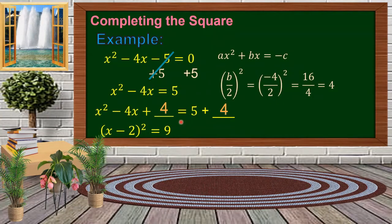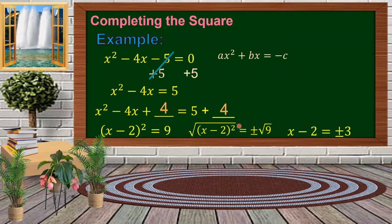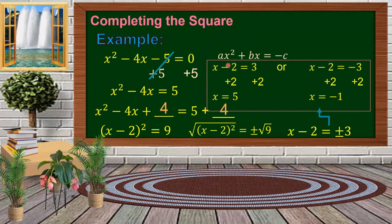We take the square root of both sides. The square root and exponent 2 cancel, leaving x minus 2 equal to plus or minus 3. For x minus 2 equal to positive 3, adding 2 on both sides gives x equal to positive 5. For x minus 2 equal to negative 3, adding 2 on both sides gives x equal to negative 1. The roots are 5 and negative 1.